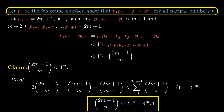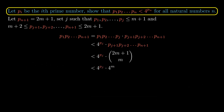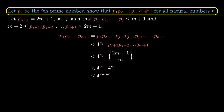Previously the product of the first j primes is less than 4 to the power of p_j by the inductive hypothesis, and the second part is less than 4 to the power of m. Since p_j ≤ m+1, the product of the first n+1 primes is less than 4^{m+1} · 4^m = 4^{2m+1}. And since 2m+1 = p_{n+1}, this is less than 4 to the power of p_{n+1}.